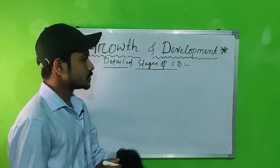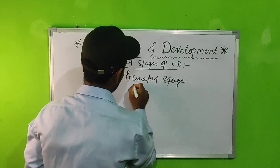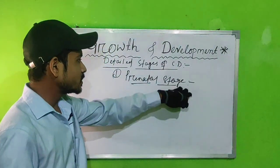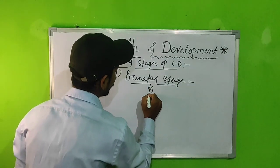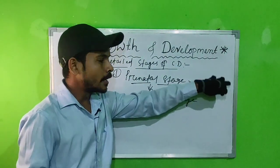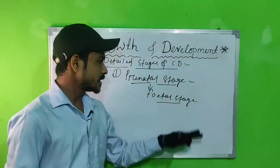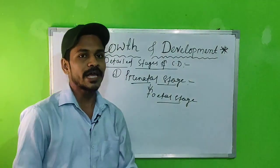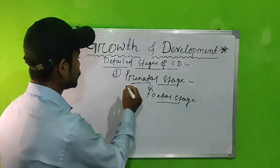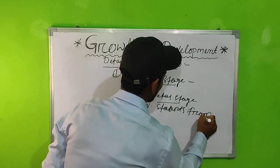Now we are going to discuss the detailed stages of child development. The first stage is the prenatal stage — also called the foetal stage. This is the period from the creation of a foetus in the mother's womb till birth. One very important exam question: development starts from the prenatal stage.